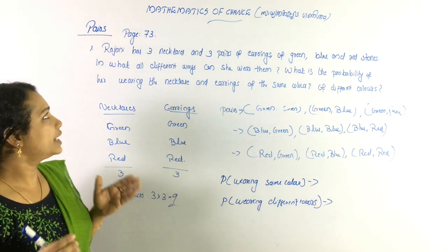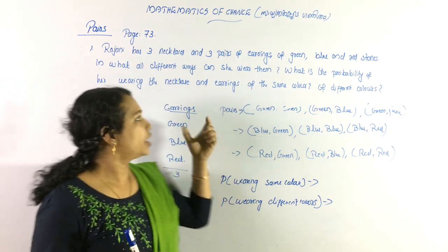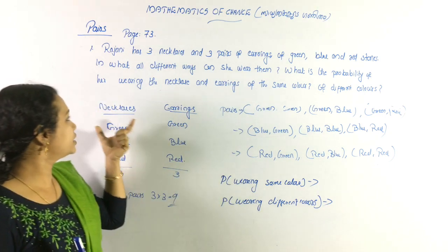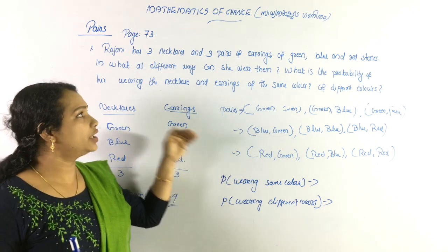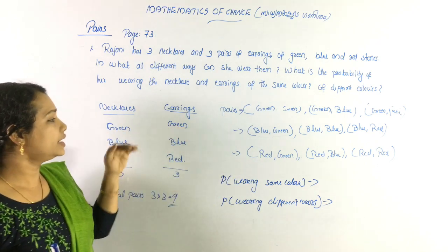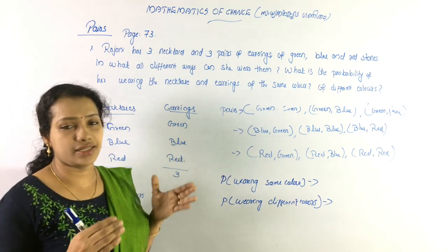Regini has 3 necklaces and 3 pairs of earrings. The colors are green, blue, and red.